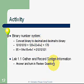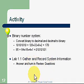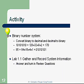We're also going to do Lab 1.1 in our lab books — gathering and recording system information. I want you to answer just the review questions at the end of the lab, fill them out on a separate sheet of paper, and turn them in for credit. This concludes Chapter 1, Part 1. Next, we'll be looking at Chapter 1, Part 2. Thank you very much for listening.